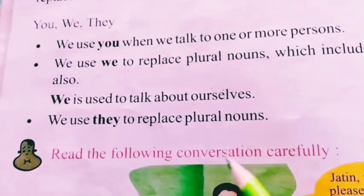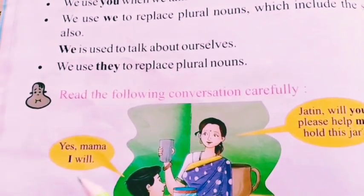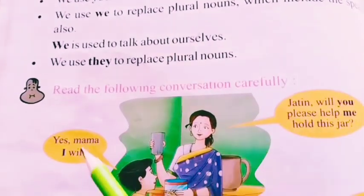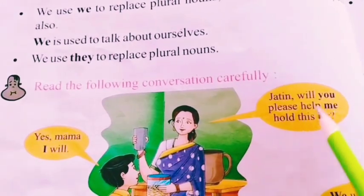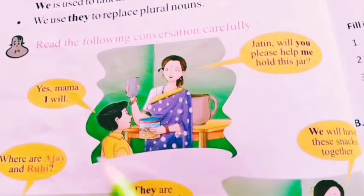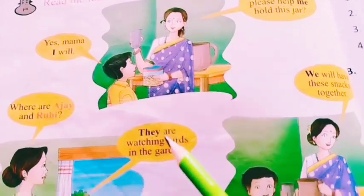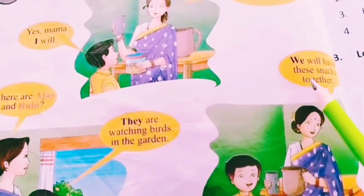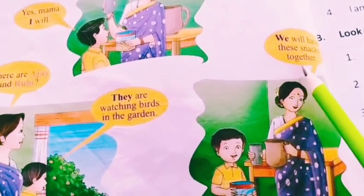Read the following conversation carefully. Will you please help me hold this jar? Yes mama, I will. Please help me hold this jar. Now when we go down to the room, he comes up telling mama: will you please help me hold this jar? We will have these snacks together.